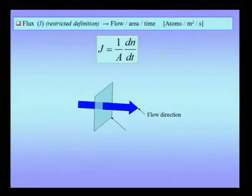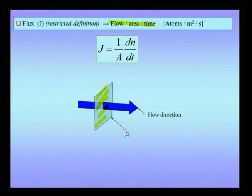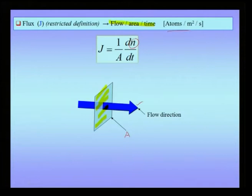One of the important quantities in diffusion is the flux of material. Flux can be defined as flow of matter per unit area per unit time. If I consider a unit area A and talk about net flow of matter in a direction shown by an arrow, then the flux would be one over area times the number of atoms crossing that unit area per unit time. The units of flux are atoms per meter squared per second, and we will use this as a basic definition in understanding the various laws, including Fick's laws of diffusion.